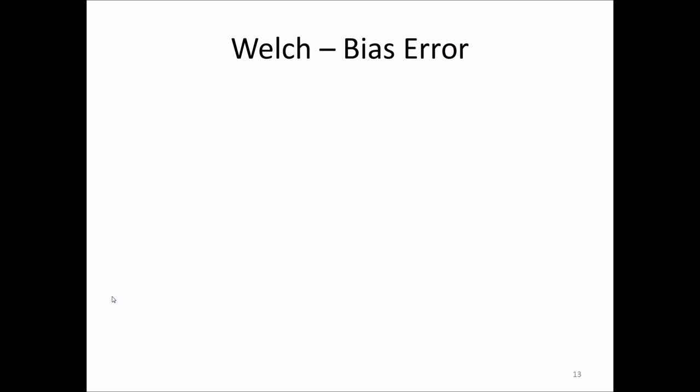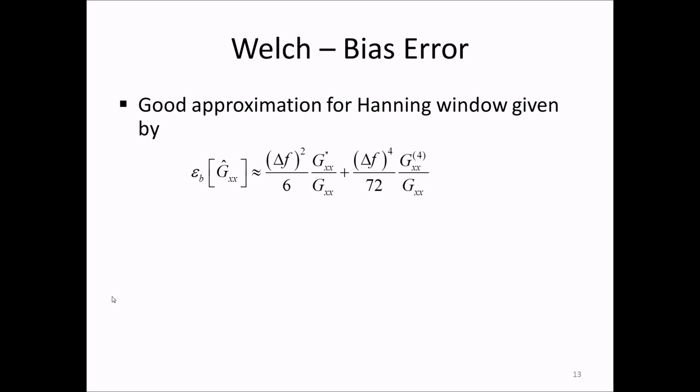We always use the Hanning window for estimating PSDs with the Welch method. A good approximation for the bias error in the Welch PSD estimate when using Hanning window is shown here. The main thing here is that it's proportional to the square of the frequency increment delta f, and the ratio of the second derivative of the PSD divided by the PSD. This means that, first of all, the bias error goes towards zero when delta f goes towards zero. This is natural since the bars fit inside the continuous function when they become narrow enough. Second, we see that the bias error is largest when the second derivative of the PSD is large, that is, around peaks.